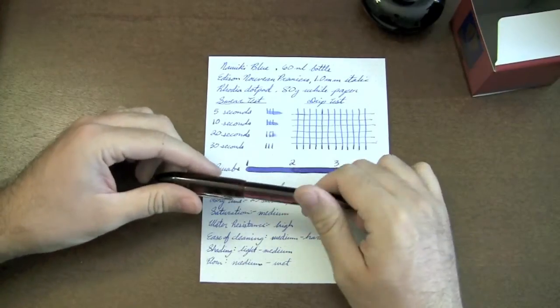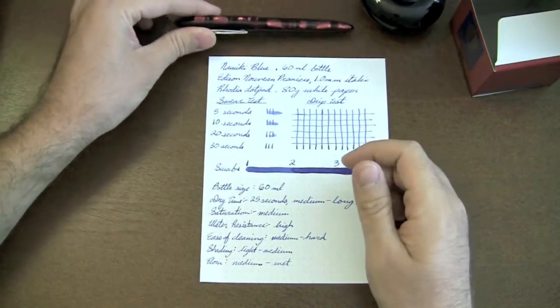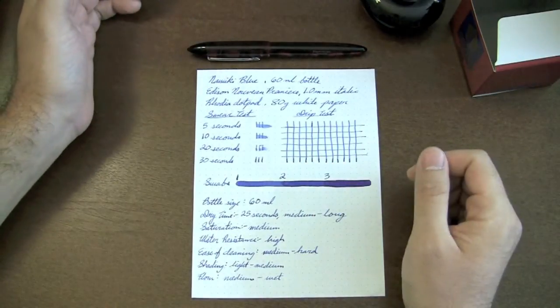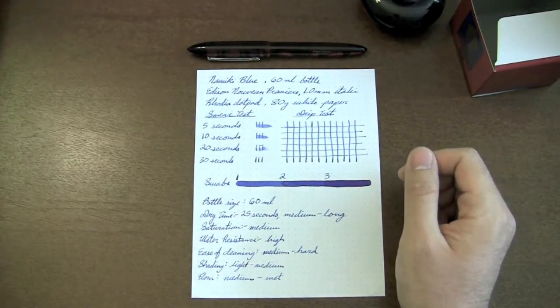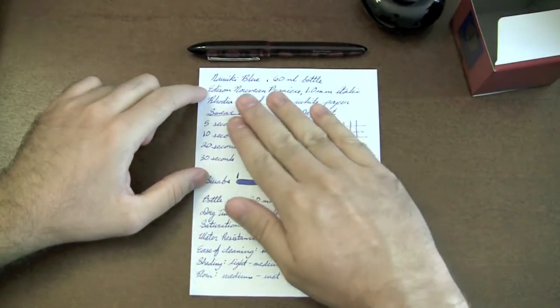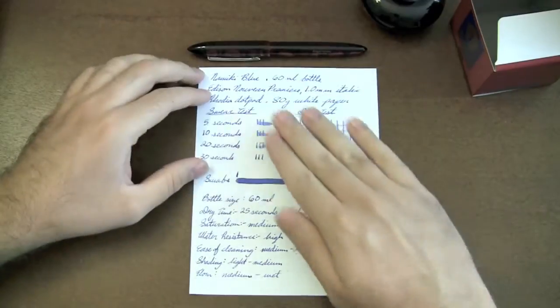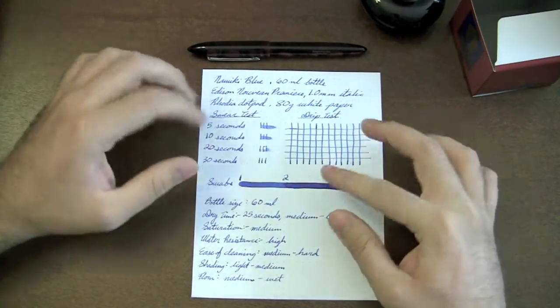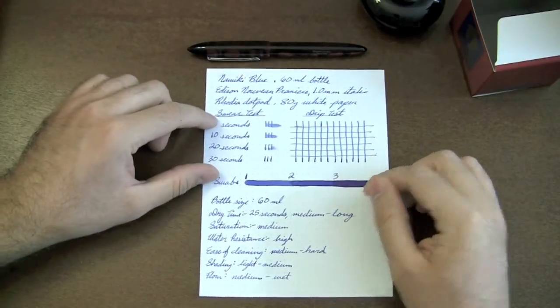Now, I will say that when you're using an italic, it's going to give you a different look to the ink than a conventional pen will just because that italic nib is kind of ground flat, so it's kind of spreading the ink out a little bit as it does it. So it's going to appear a little bit lighter than the ink normally would. So take that into account when you're looking at this review.